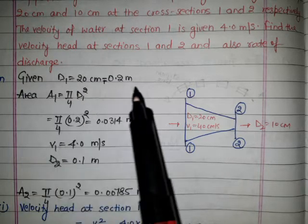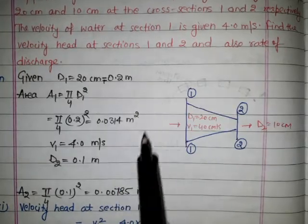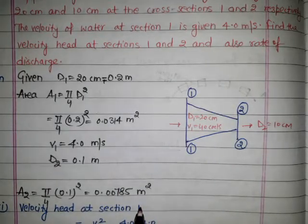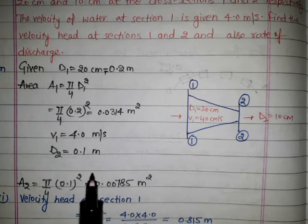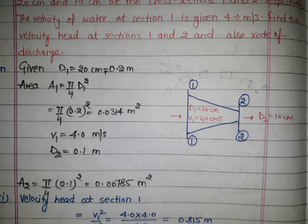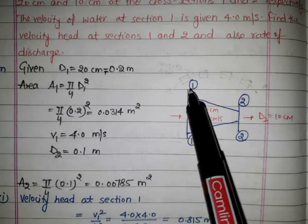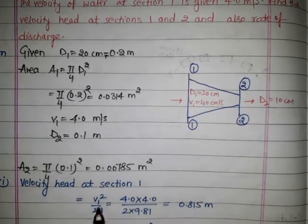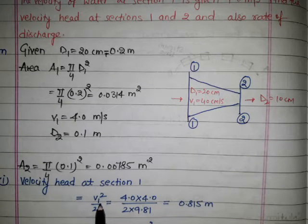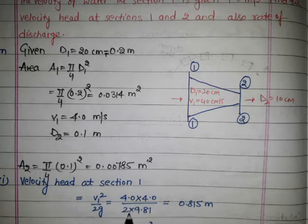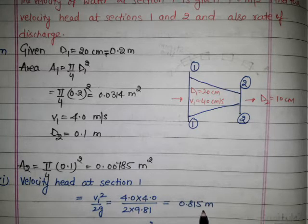Now we find the velocity head. From the Bernoulli equation, the velocity head is v²/2g. For section 1, the velocity head is v1²/2g = (4 × 4) / (2 × 9.81), where g = 9.81 meter per second square. This gives 0.815 meter.